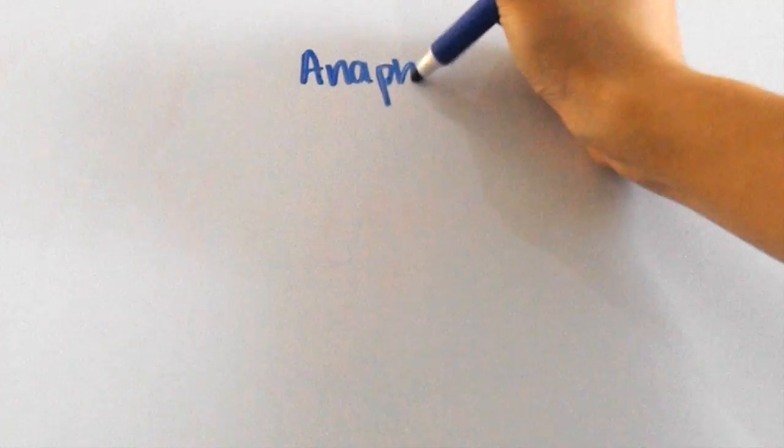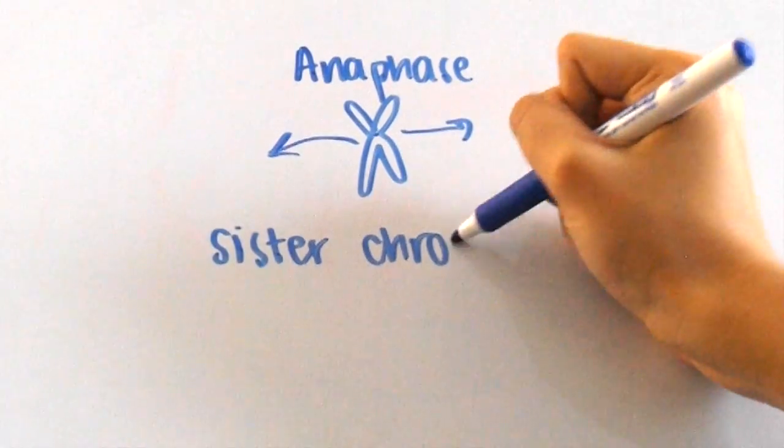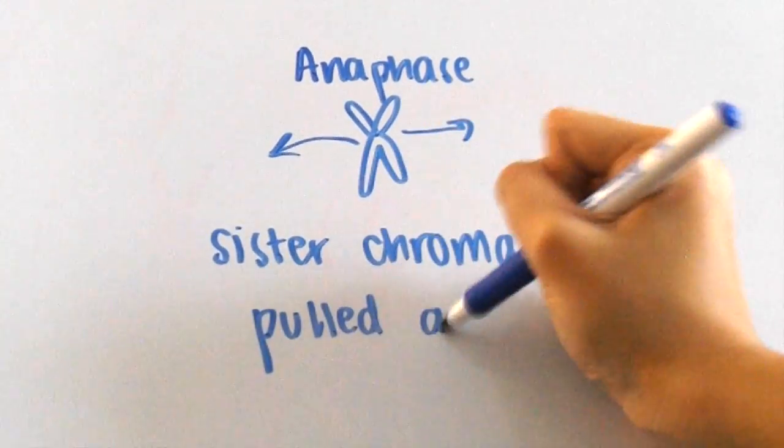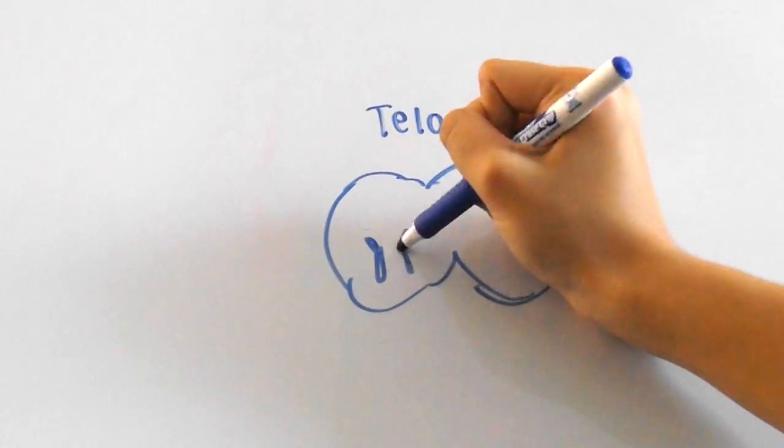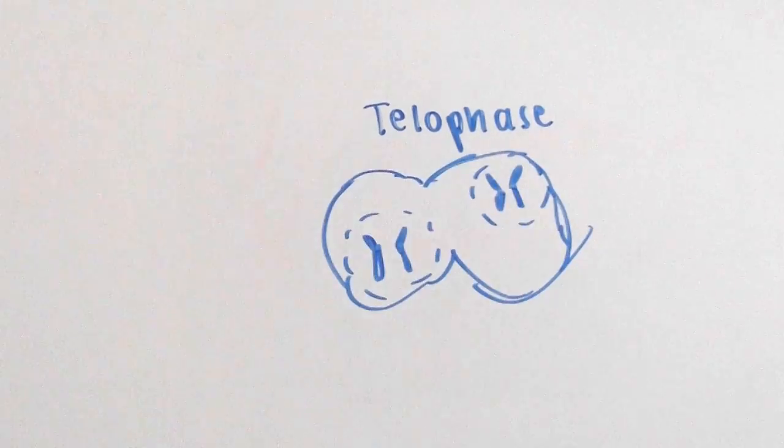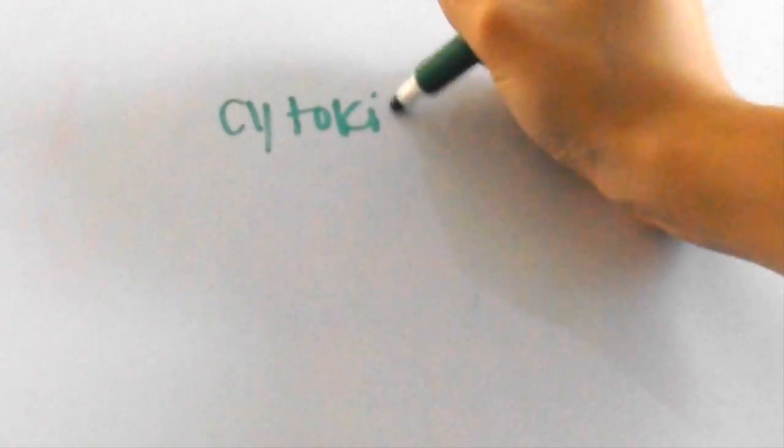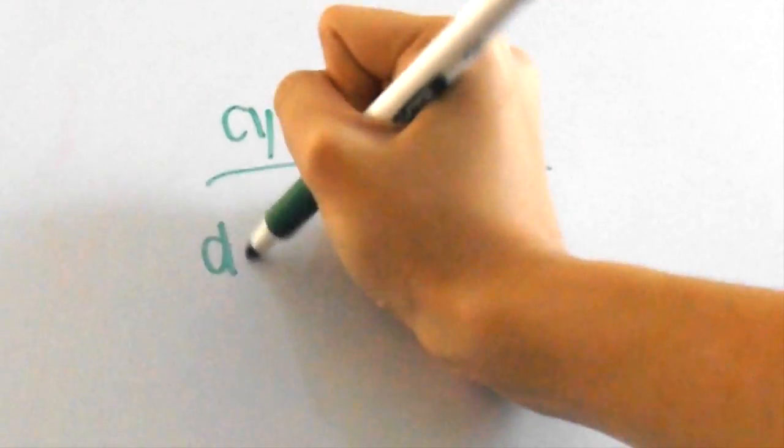We just said that anaphase is when the sister chromatids are being pulled apart from each other. The last part is called telophase, in which nuclear envelopes start to surround the separated chromosomes, and the two cells sort of cleave away from one another. This process of dividing the cytoplasm of the cells is called cytokinesis.